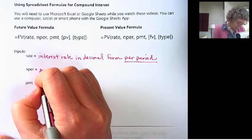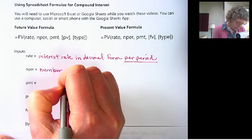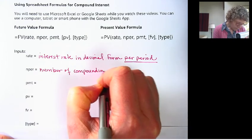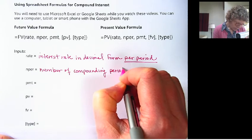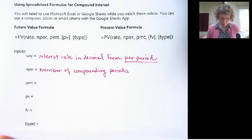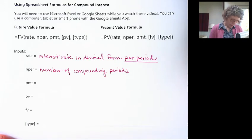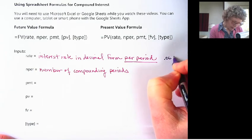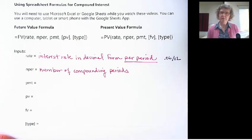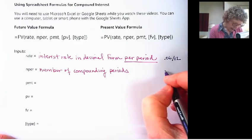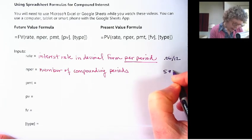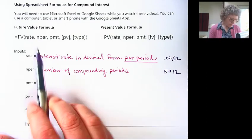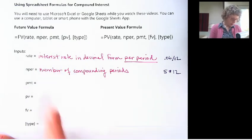Nper is the number of periods, number of compounding periods. So just as an example from what we were doing in the last video, I gave the example of compounding monthly. The per period, that would be .06 divided by 12 for monthly. And then we would need to take however many years times 12. And that would give us the number of compounding periods. So we can do all this right inside of our formula.